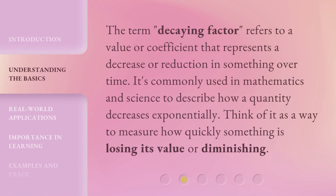The term 'decaying factor' refers to a value or coefficient that represents a decrease or reduction in something over time. It's commonly used in mathematics and science to describe how a quantity decreases exponentially. Think of it as a way to measure how quickly something is losing its value or diminishing.